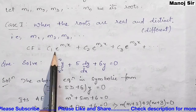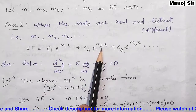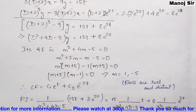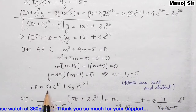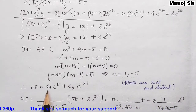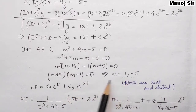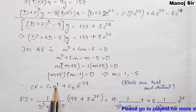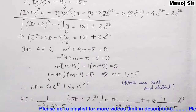When roots are real and distinct (m1, m2), the complementary function is CF = c1·e^(m1·t) + c2·e^(m2·t). Applying this with m1 = 1 and m2 = −5, the CF becomes c1·e^t + c2·e^(−5t).